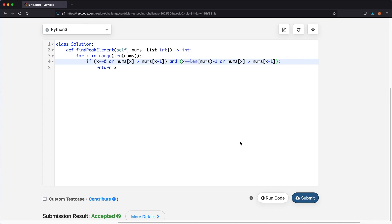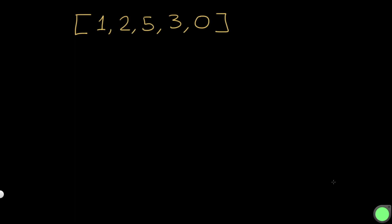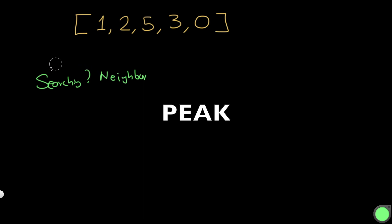This O(n) solution is pretty simple, but we want an O(log n) solution. We can optimize using binary search. It might be hard to understand why we can use binary search here, since normally we use it on sorted arrays — but in this case, that's not necessarily true. What we're actually searching for is a neighbor that leads us toward a peak.